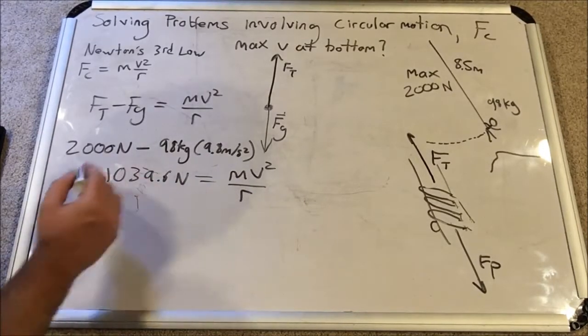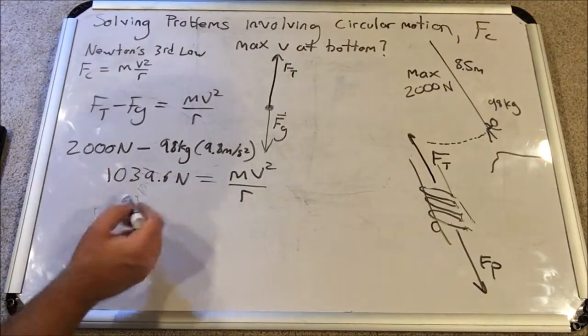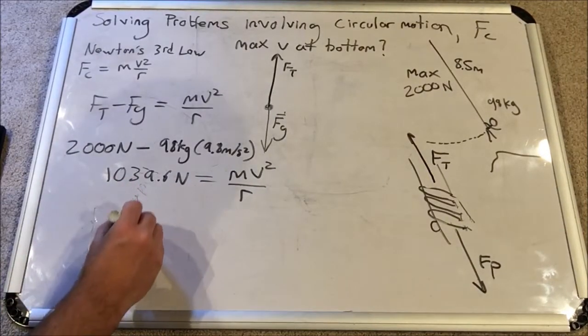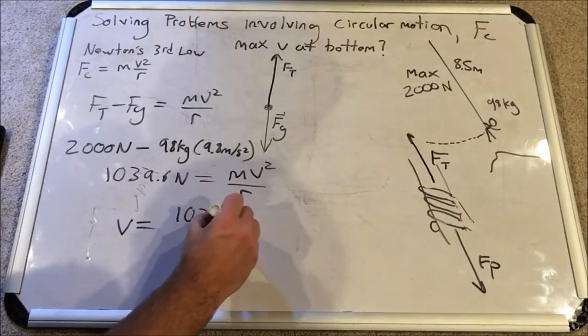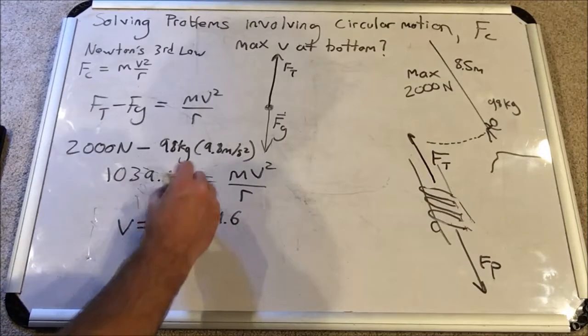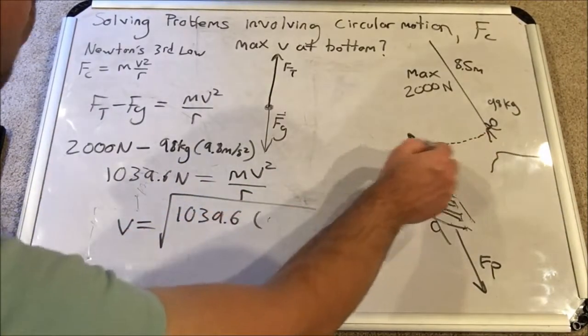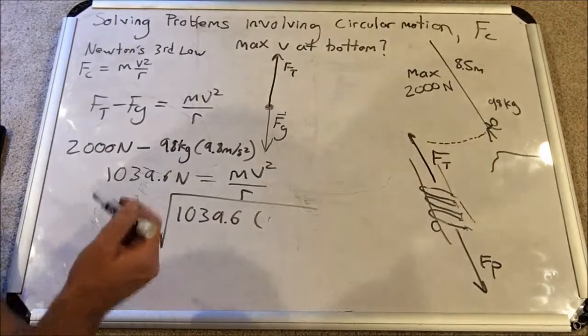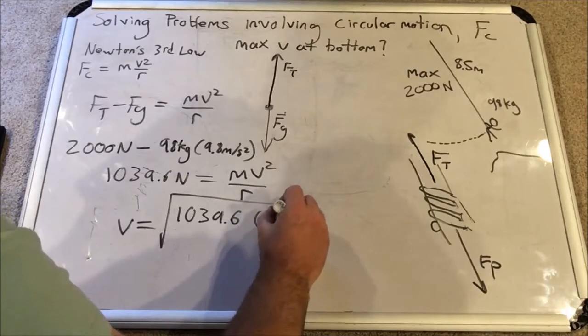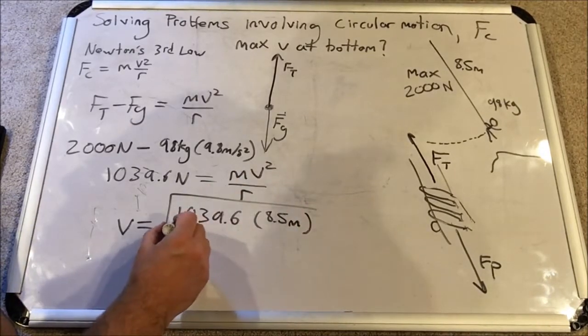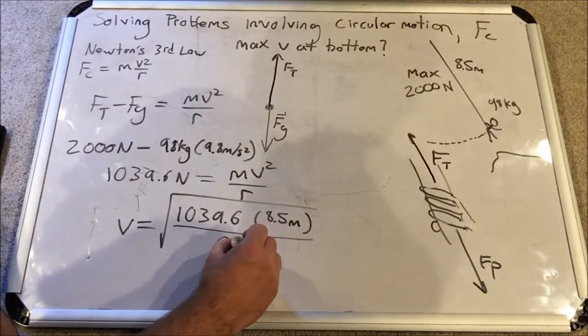That will involve moving the radius of rotation to the other side. It will involve dividing by the mass and then square rooting. So v equals square root of 1039.6 times the radius of our circular path. Remember, the whole reason we could do this is because it's somewhat circular. It's a portion of a circle. This is an 8.5 meter radius of that rotation, the length of the rope, and divided by his mass, 98 kilograms.